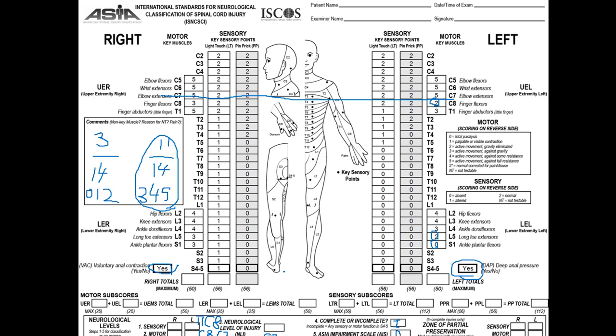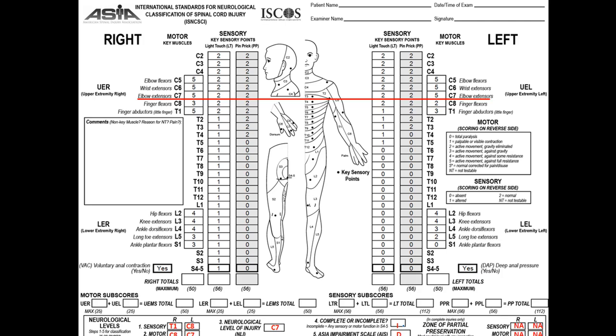The zone of partial preservation is just like our previous example — it is NA. So the final answer is: incomplete injury, AIS D, zone of partial preservation NA.